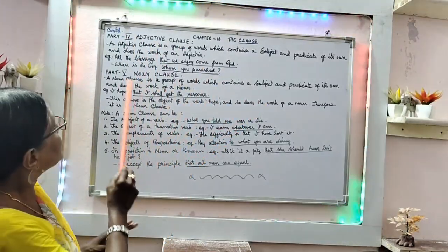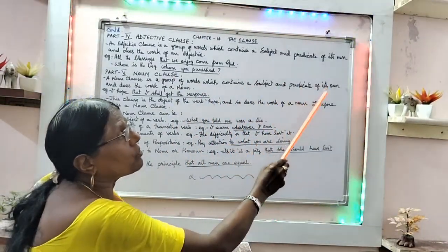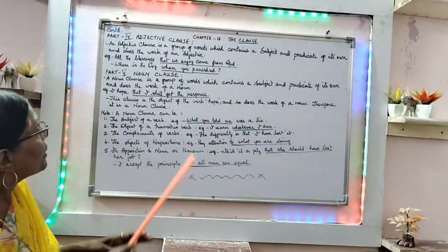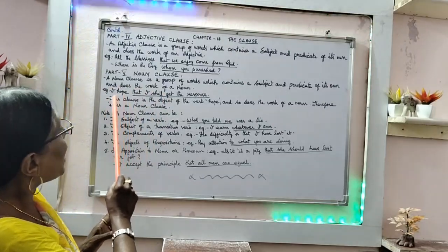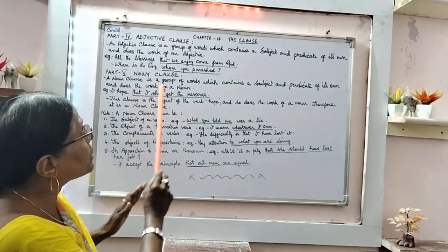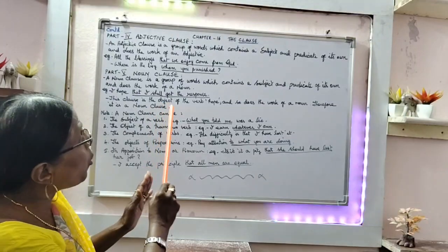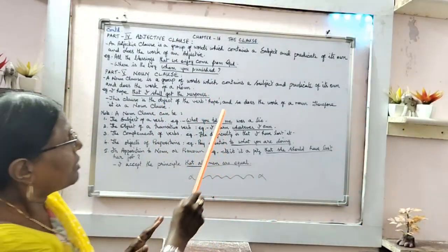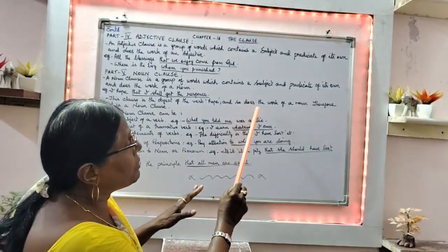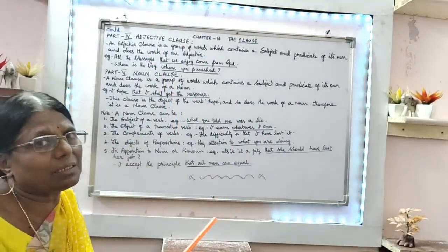What is a noun clause? A noun clause is a group of words which contains a subject and predicate of its own and does the work of a noun. Example: 'I hope that I shall get the response.' The clause 'that I shall get the response' is the object of the verb 'hope,' and so it does the work of a noun. Therefore, it is called a noun clause.